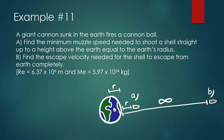A giant cannon sunk in the Earth fires a cannonball. Find the minimum muzzle speed needed to shoot a shell straight up to a height above the Earth equal to the radius of the Earth. So we're starting over here, shooting a shell, and then we're ending at this point over here, which is going to be equal to the radius of the Earth. We want to find the minimum muzzle speed needed. With these problems, it's usually set up similarly — we're going to be using conservation of energy to figure this out.